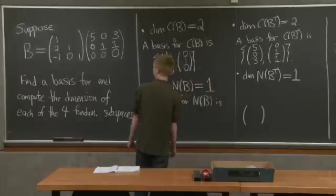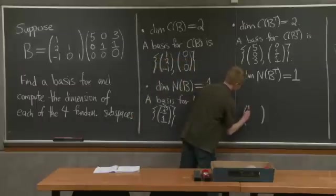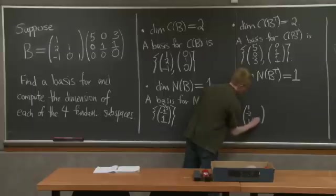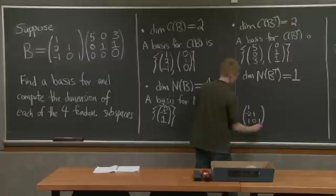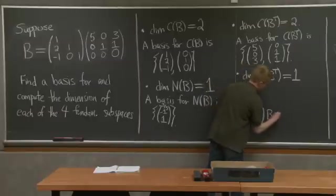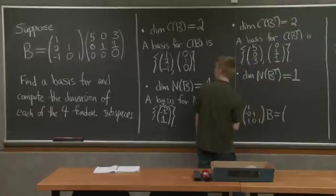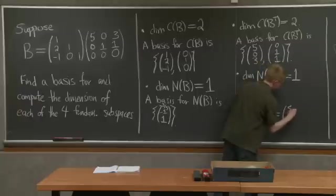So what's the inverse of the L matrix? We just get 1, negative 2, 1, 0, 1, 1, times B is our U matrix, this upper triangular matrix.